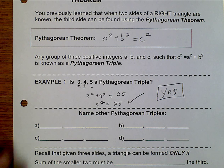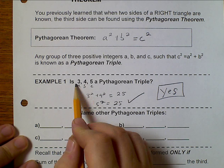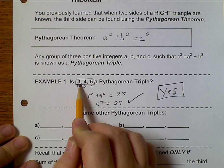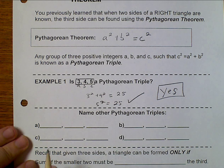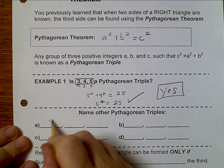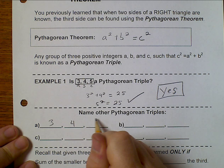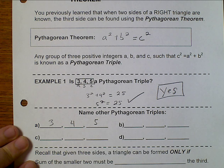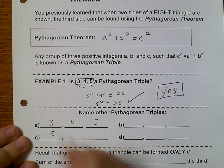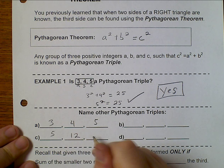So 3, 4, 5 is one of our Pythagorean Triples. I'm going to go ahead and mark that one down here. 3, 4, and 5. Here are some other ones: 5, 12, and 13.